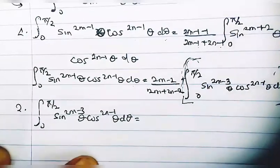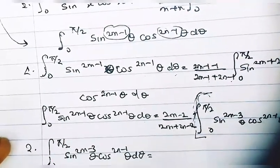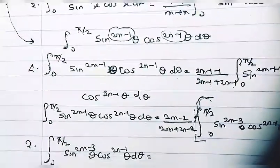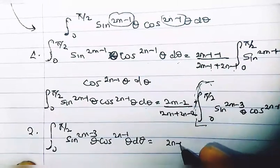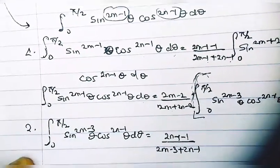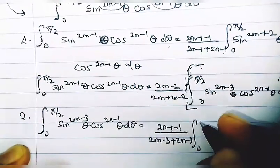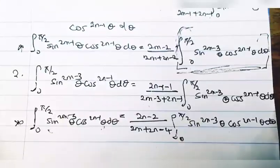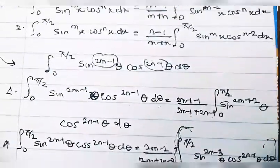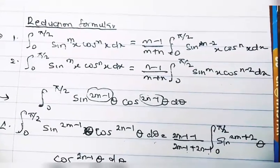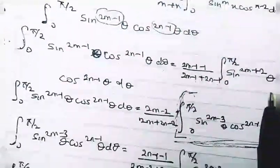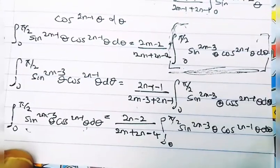Imposing on the second reduction formula — replacing m with (2m-3) and n with (2n-1) — I get (2n-1-1) divided by (2m-3+2n-1), times the integral from zero to pi/2 of sine^(2m-3)(theta) cos^(2n-3)(theta) d-theta. Note that replacing n with (2n-1) in the 'n-2' term gives (2n-1-2) = (2n-3).